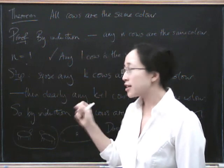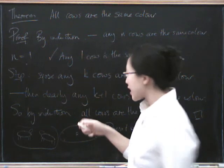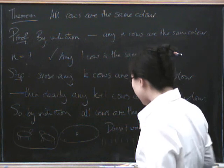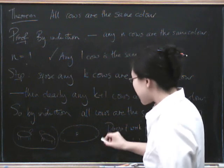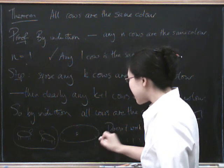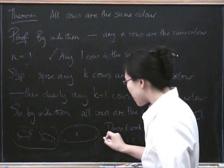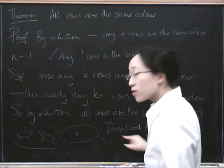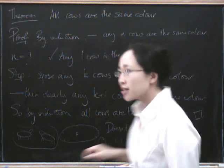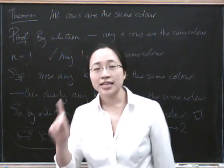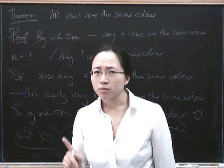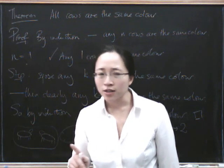Two to three would work, and all the other steps, but we've got that little gap. It's like a string of dominoes — we tipped over the first one, but the first one didn't tip over the second one, even though the second one onwards would tip over all the others. So that's just a little warning to be very careful when you're proving something by induction.